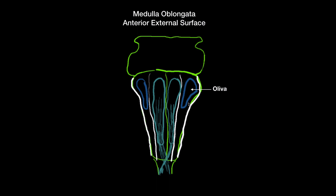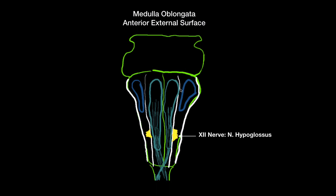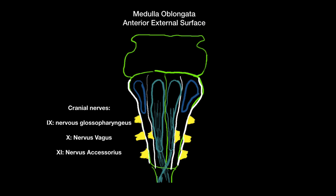On the external surface you're also going to have some nerves coming out. On the sulcus anterolateralis you're going to have the 12th cranial nerve coming out — that's the hypoglossal nerve. Then on the sulcus posterolateralis you're going to have the 9th, 10th, and 11th cranial nerves coming out: the nervus glossopharyngeus, the nervus vagus, and the nervus accessorius — the accessory nerve.